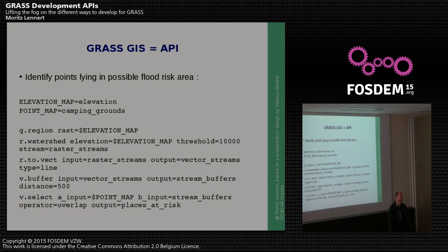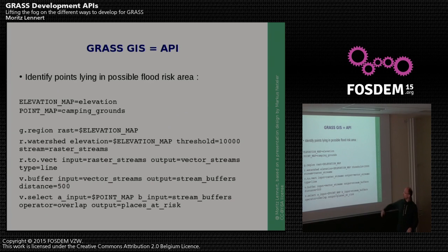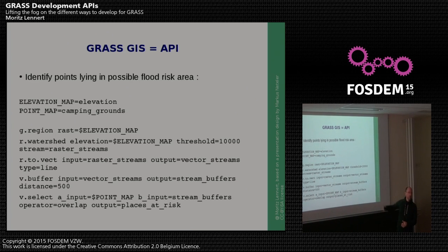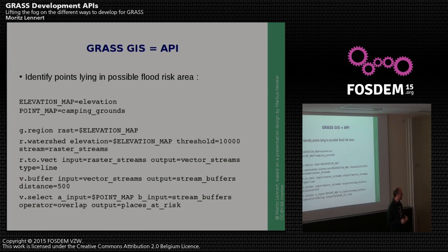Just chaining these modules can be considered writing a program. Here you see a very simplistic program saying, let's test if any of our points fall into very roughly designed flood risk areas. You have the chaining of a series of commands that take an elevation model, estimate where streams are most probable, or where water accumulation is going to be most important, then transform that to a vector, buffer it, and check which of our points — in this case camping grounds — fall into a 500-meter radius around these streams.